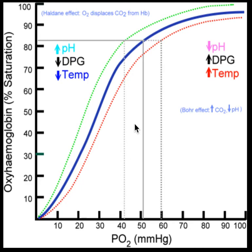This is part three of our video series on the hemoglobin dissociation curve. In part one, we talked about the basics of the blue line — the normal hemoglobin dissociation curve. Then in part two, we talked about the red line, which was a right shift in the hemoglobin dissociation curve. In this video, we're going to talk about a left shift in the hemoglobin dissociation curve.